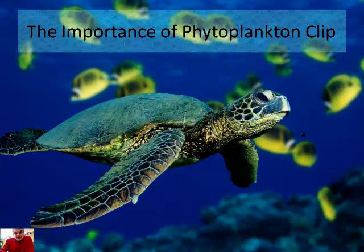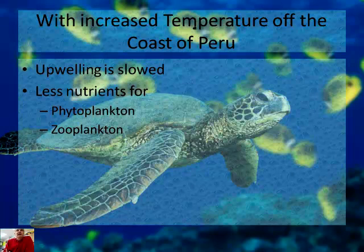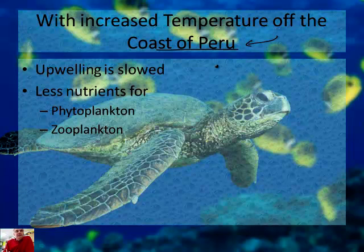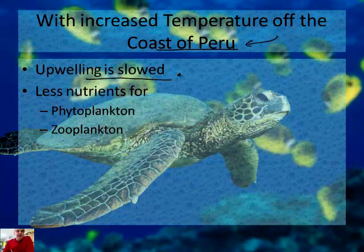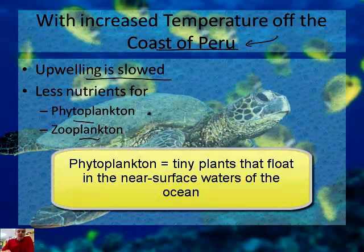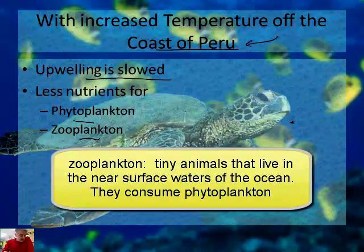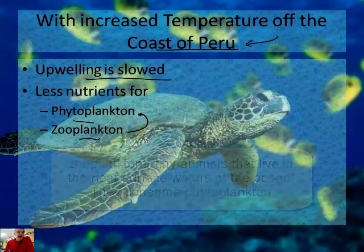Wow — they are very important, amazing. These little critters have such an impact on the entire world. So let's talk about how this relates to the El Niño effect. If you have an increased temperature off the coast of Peru — we're just going to focus on Peru — the upwelling is slowed, so there's less upwelling. That means there's less nutrients for the phytoplankton and the zooplankton. Remember, a phytoplankton is a tiny plant that floats in the near-surface waters of the ocean, and a zooplankton — like a zoo — is a tiny animal that lives in the near-surface waters of the ocean. They consume phytoplankton. So the zooplankton eat the phytoplankton.